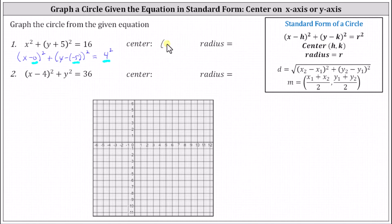Let's go ahead and record this. This is enough information to graph the circle on the coordinate plane. We first plot the center, zero, comma, negative five. And then because the radius is equal to four, we can find four points on the circle by starting at the center and going right four units, left four units, up four units, and down four units. And now we graph a circle passing through the four points.